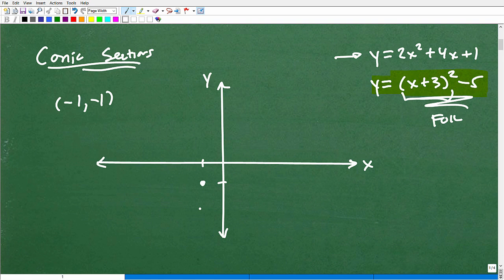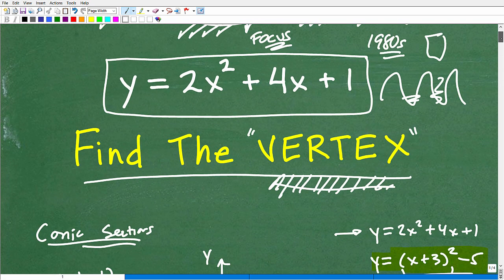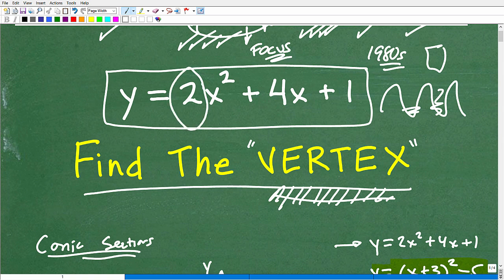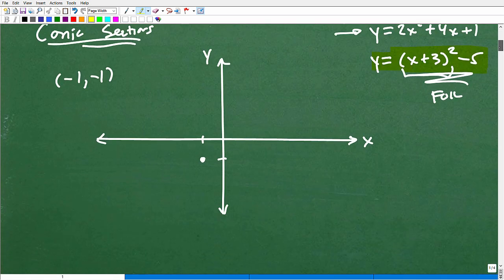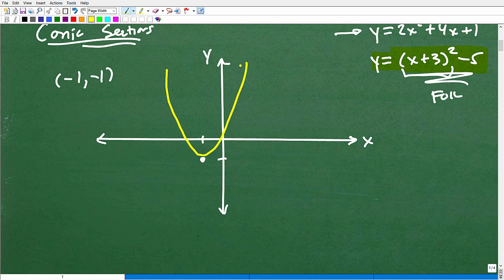Now remember we talked about a happy or sad parabola. How can we determine if it's a happy or sad parabola? Well, if this leading coefficient is a positive number, if it's positive, then it's a happy parabola. If it's negative, it's a sad parabola. So this particular parabola is going to be happy, meaning that it's going to have an upward shape like this, something like that. And here, again, is our vertex at negative 1, negative 1. And then how we can find more points here and get an axis of symmetry, etc. Well, that's for additional videos that you can watch if you like my teaching style. I have tons of this stuff in my algebra playlist on parabolas.